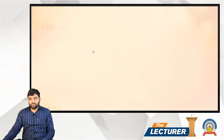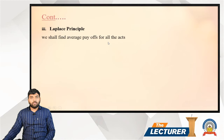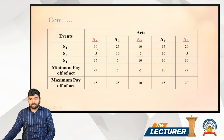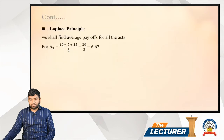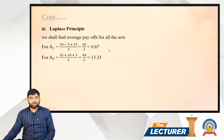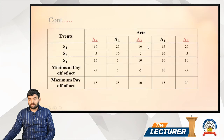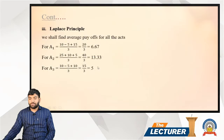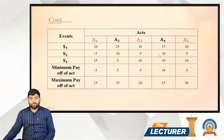For the Laplace principle, we shall find the average payoff for all acts. For a1: (10 + minus 5 + 15 + 10 + minus 5 + 15) divided by 3 equals 6.67. For a2: (25 + 10 + 5) divided by 3 equals 40 divided by 3, which is 13.33. For a3: (10 + minus 5 + 10) divided by 3 equals 15 divided by 3, which is 5.